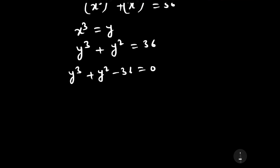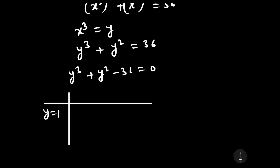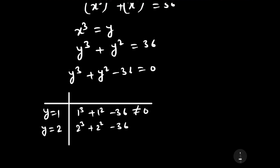Let us find its factor or root by the Remainder Theorem using trial and error method. If we put y equal to 1, then it will be 1 cubed plus 1 squared minus 36, which is not equal to 0, so y minus 1 is not a factor. If we put y equal to 2, then it will be 2 cubed plus 2 squared minus 36, which is 8 plus 4 minus 36, equal to 12 minus 36, which is also not equal to 0. Therefore this is not a root either.